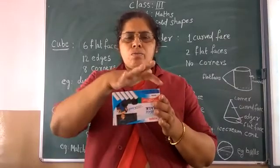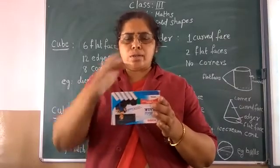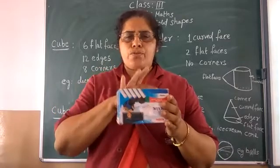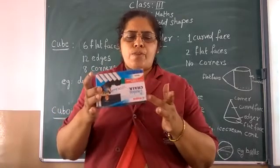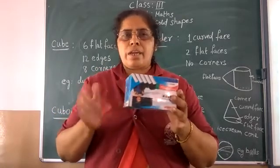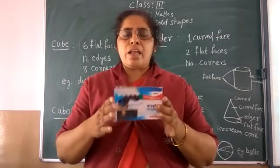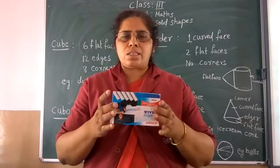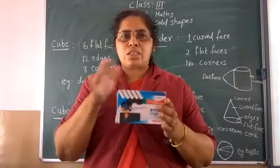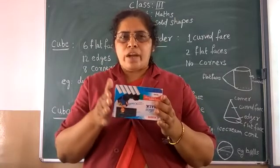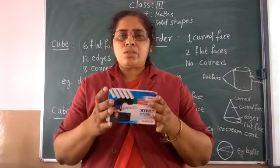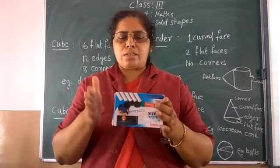And now the corners. Let me count: 1, 2, 3, 4, 5, 6, 7, 8. There are 8 corners. So a cube has 6 faces, 12 edges, and 8 corners.